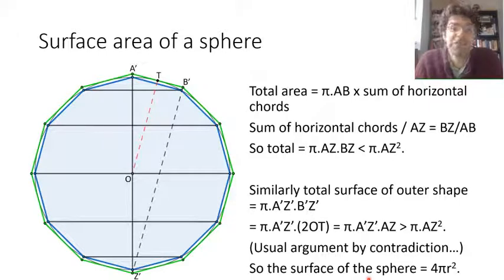Conversely, if the sphere's surface area were a bit less than 4πr², we could construct a circumscribed shape that would be close enough to the sphere that its area would also be less than 4πr², contradicting what we just established—the fact that it's always a little bit more than 4πr².